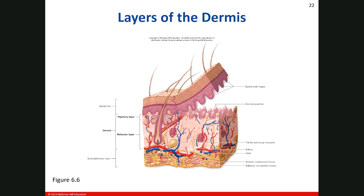Here you can see how the epidermis with the epidermal ridges interlocks with the dermal papillae, creating a locking mechanism. It adds stability between these two layers, and that's what forms those fingerprint ridges that are unique to each of us.